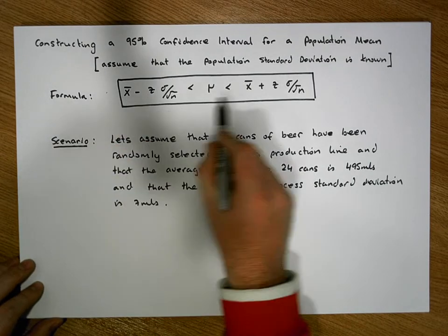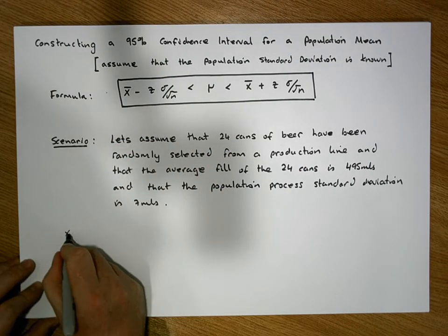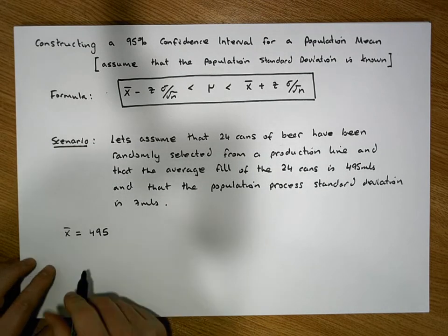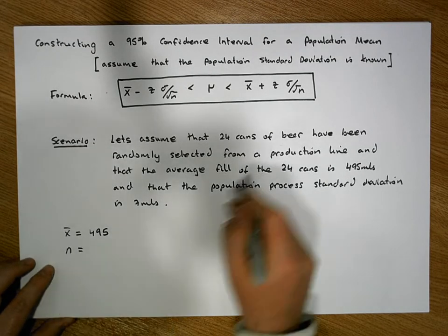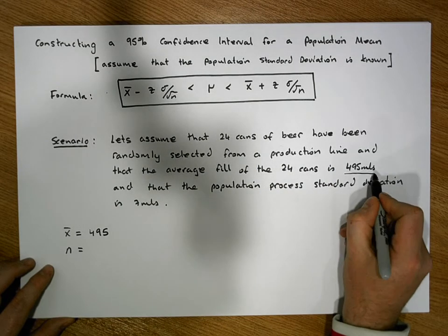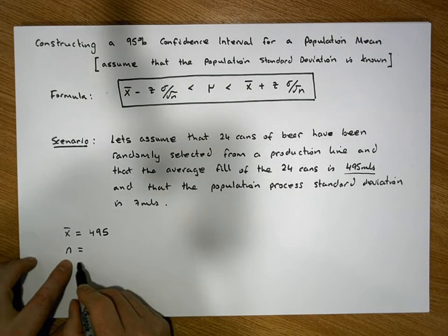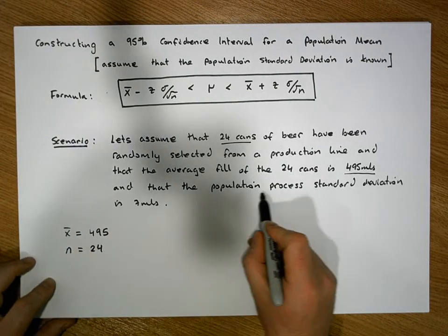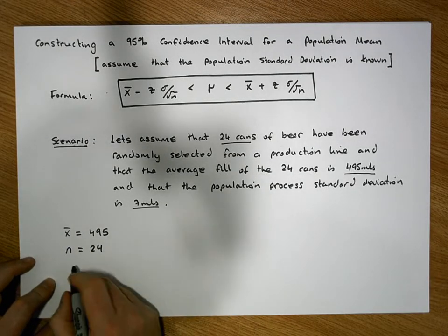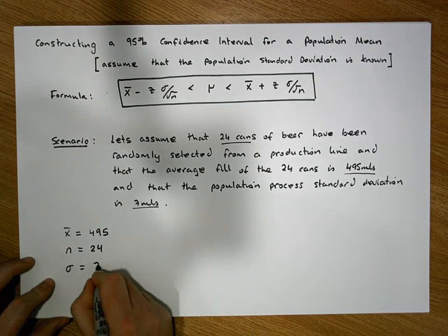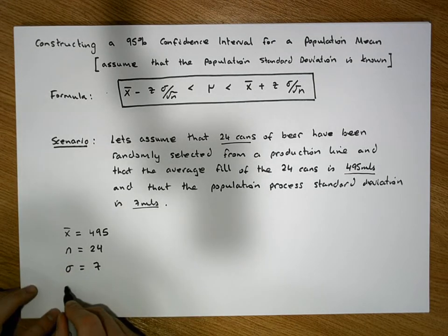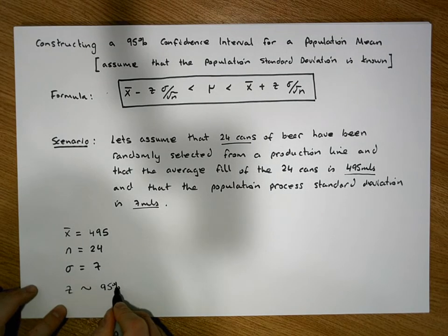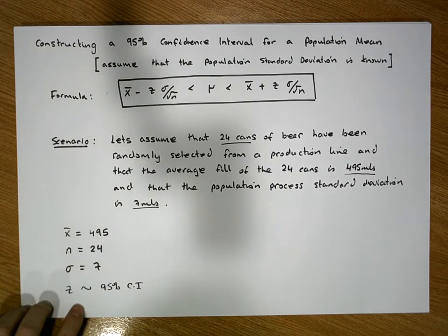So what parameters and statistics are we given? We're given x-bar, the sample mean, which is 495 mils. We're given the sample size n, which is 24. We're given the population standard deviation sigma, which is 7 mils. What we don't know is the z score associated with a 95% confidence interval, and we need to calculate that.